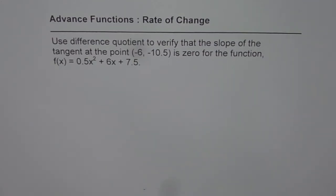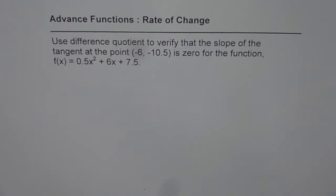Advanced Functions Rate of Change. I am Anil Kumar, and here is a question from one of my subscribers on YouTube. Use the difference quotient to verify that the slope of the tangent at the point (-6, -10.5) is 0 for the function f(x) = 0.5x² + 6x + 7.5.